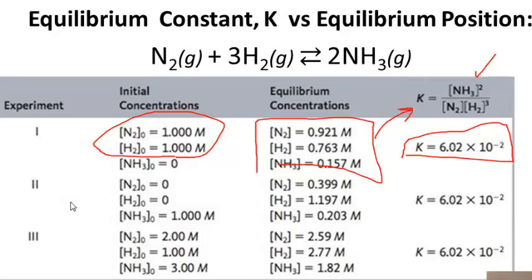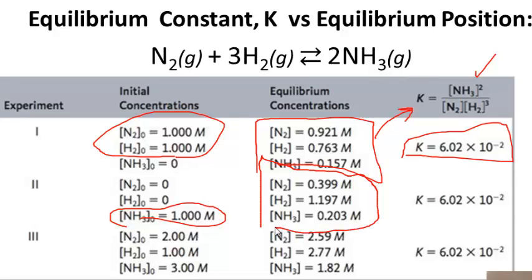In experiment two, we've done the opposite — all we have is products; it's all ammonia. There's no nitrogen and no hydrogen. The ammonia decomposes and forms nitrogen and hydrogen, and here we have the concentrations of all the reactants and products at equilibrium. When those are inserted into our K expression, we find exactly the same value for K: 6.02 times 10 to the minus 2.